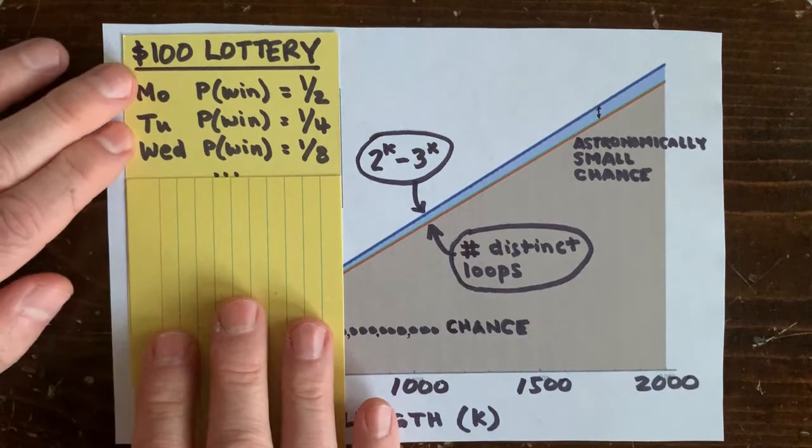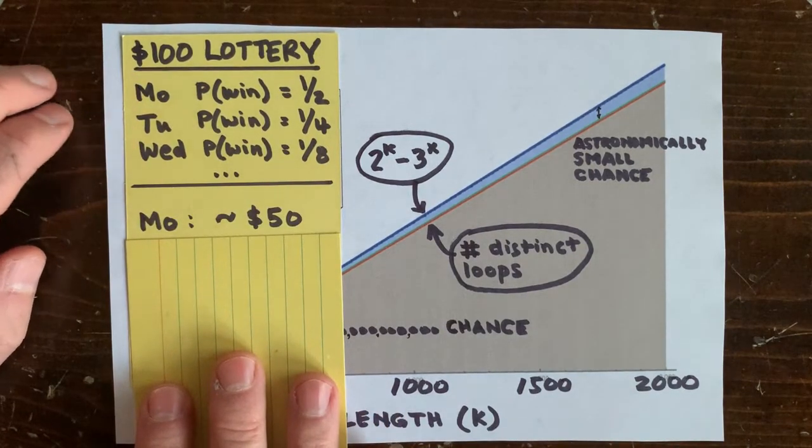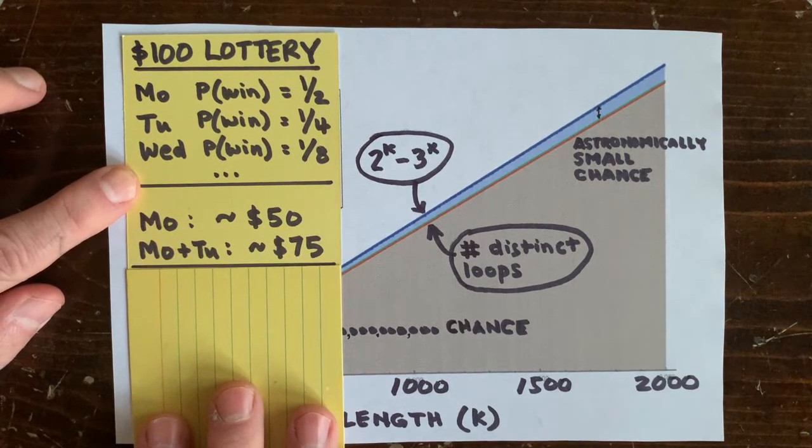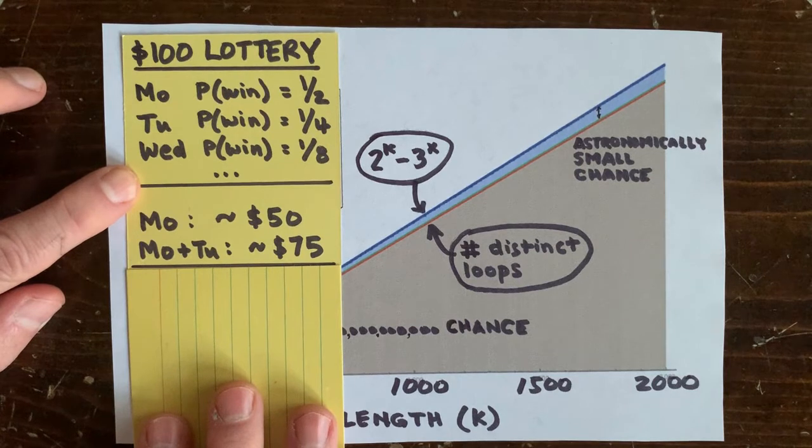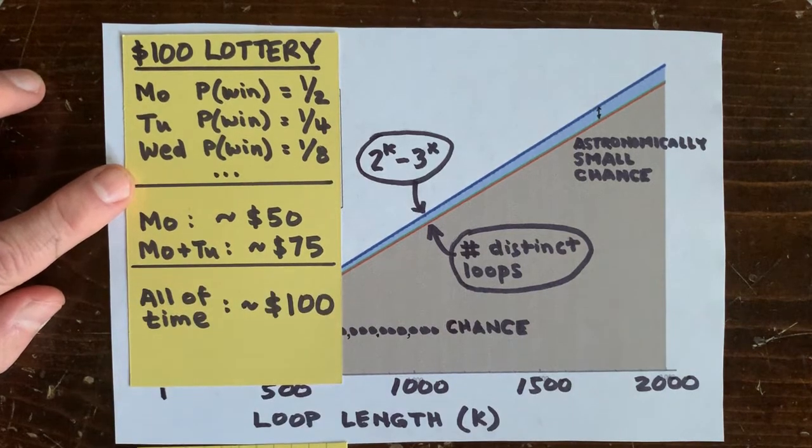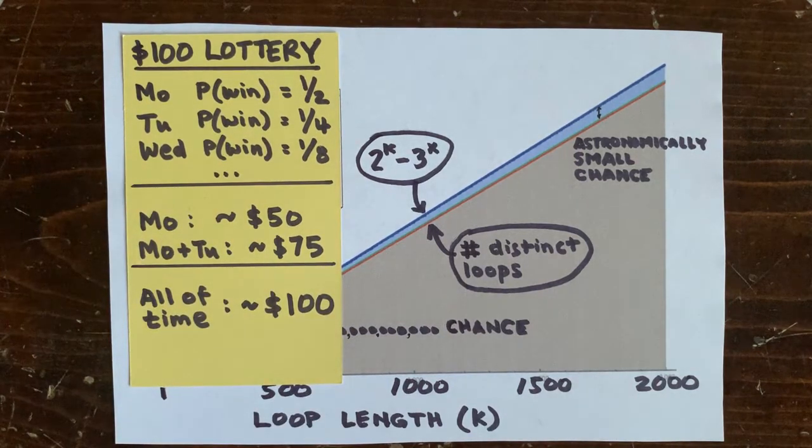Considering just Monday you would expect to win $50 on average. Considering Monday and Tuesday together you would expect to win around $75 on average. So far so good. So considering the infinity of future days, would you expect to win an infinite amount of dollars total? Not really. This series converges and you only expect to win a total of $100 throughout all of time.